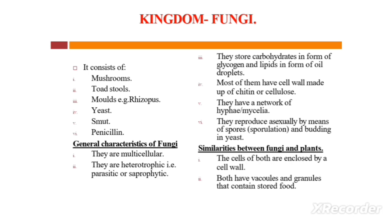They store their carbohydrates in the form of glycogen, and lipids in the form of oil droplets. Number three: most of them have a cell wall which is made up of chitin or cellulose.